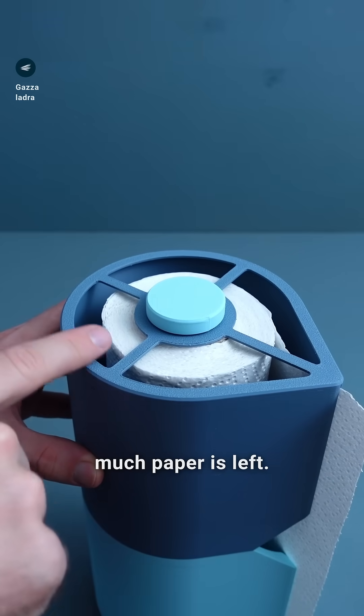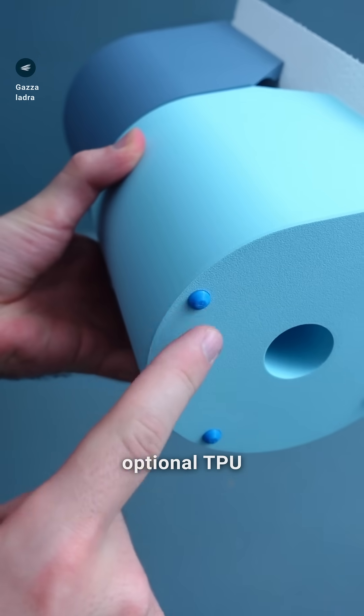The top has holes, so you can see how much paper is left. The bottom has indentations, so you can add optional TPU or rubber feet.